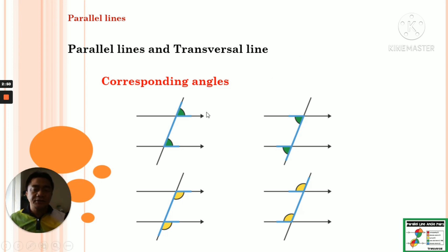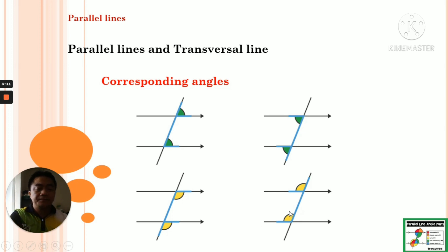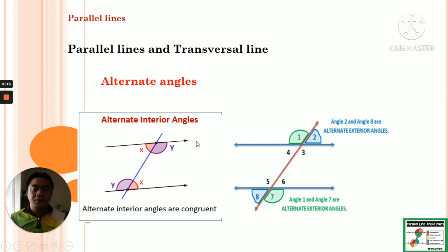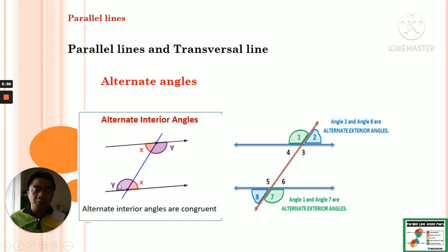So this angle and this angle are equal — they are corresponding angles. One is on the exterior and the other is on the interior. For alternate interior angles, these are inside, in between the parallel lines, but the angles are on opposite sides of the transversal line — one is facing the left side and the other is facing the right side. So these two angles X are alternate interior angles, one to the left and the other to the right.